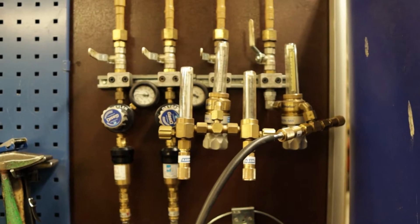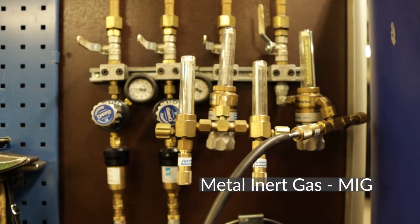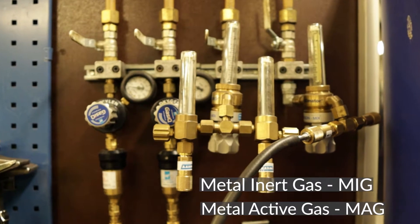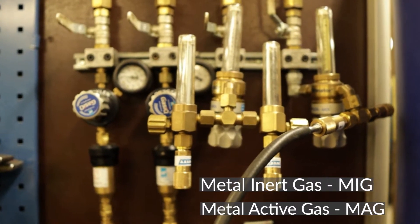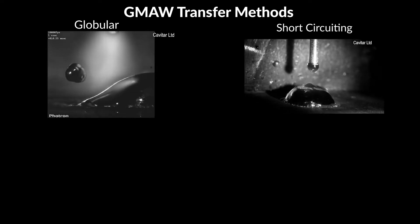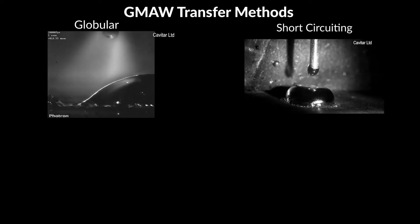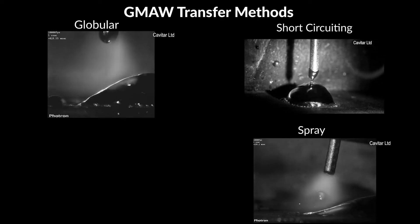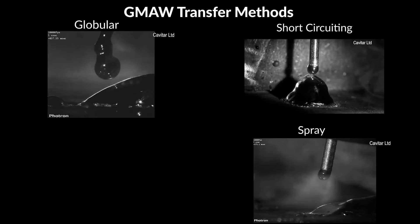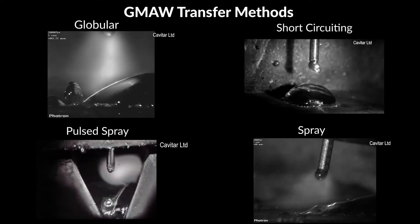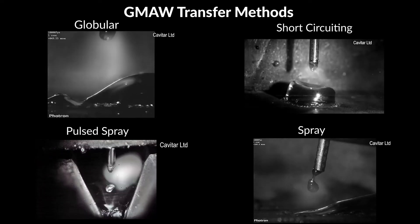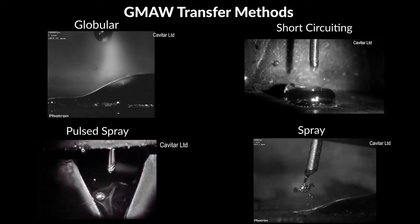Based on the type of gas used, the process is referred to as MIG, Metal Inert Gas, or MAG, Metal Active Gas. The metal transfer methods commonly used in GMAW are globular, short-circuiting, spray, and pulsed spray. The method chosen depends on the purpose of the welding.